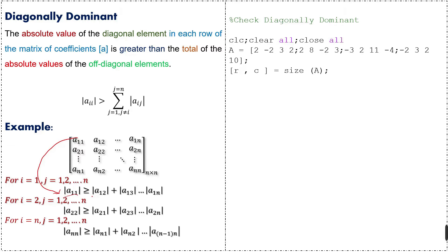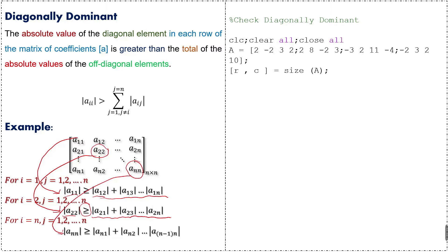The absolute value of the diagonal element is greater than or equal to the total or sum of absolute values of the off-diagonal elements in a row. Similarly for the second diagonal element, the absolute value is greater than or equal to the sum of absolute values of off-diagonal elements in a row, and similarly for the nth diagonal element.